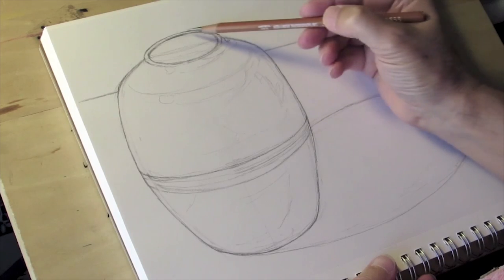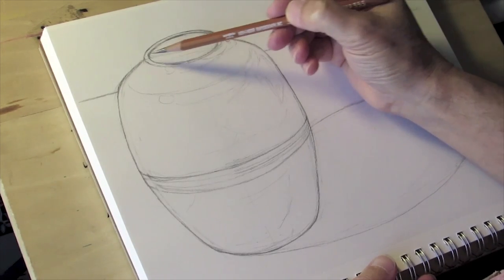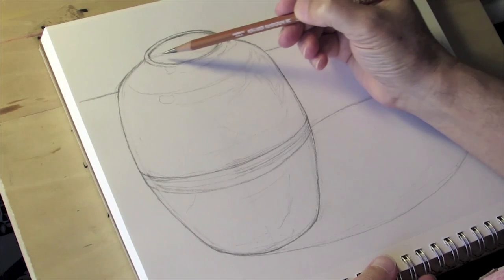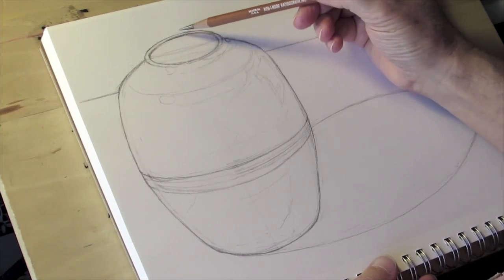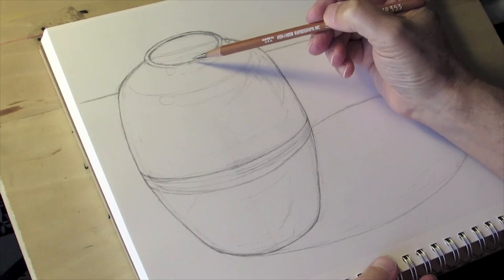The oval portion of the ceramic pot I created by, again, as shown earlier in the video, putting in a horizontal and a vertical line very lightly and then adjusting the shapes until I had them correct.